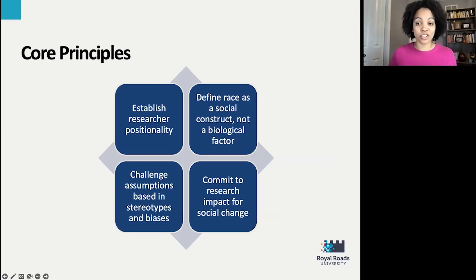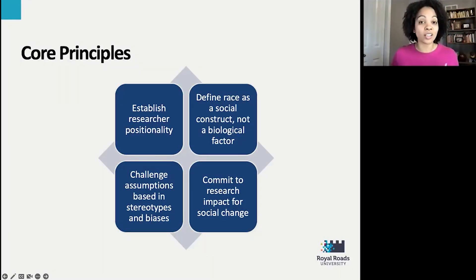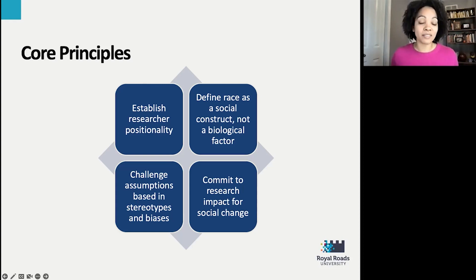Anti-racist research approaches hold themselves accountable for how race is used in the research design and process. There are four key principles. First, the researcher must establish their positionality to the concept of race and the racial groups they wish to include in their research design. Positionality is defined as the notion that personal values, views, and location in time and space influence how one understands the world. I believe positionality is relevant to both qualitative and quantitative research.